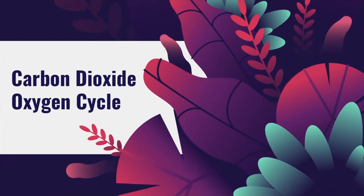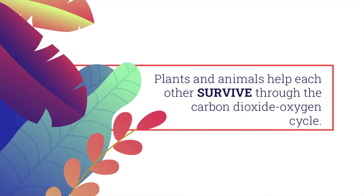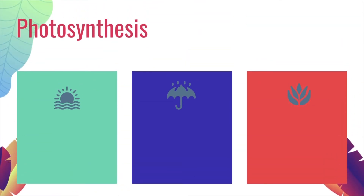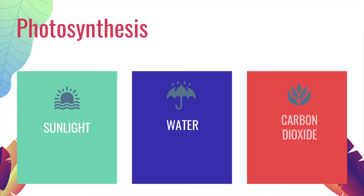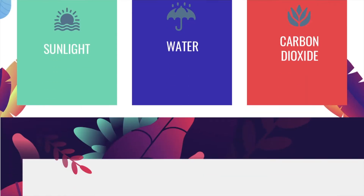The carbon dioxide oxygen cycle. Plants and animals help each other survive through the carbon dioxide oxygen cycle. But first we have to talk about photosynthesis. Photosynthesis requires sunlight, water, and carbon dioxide. Through the process of photosynthesis, plants make food and oxygen — the energy they need to grow — and oxygen they then release into the air.